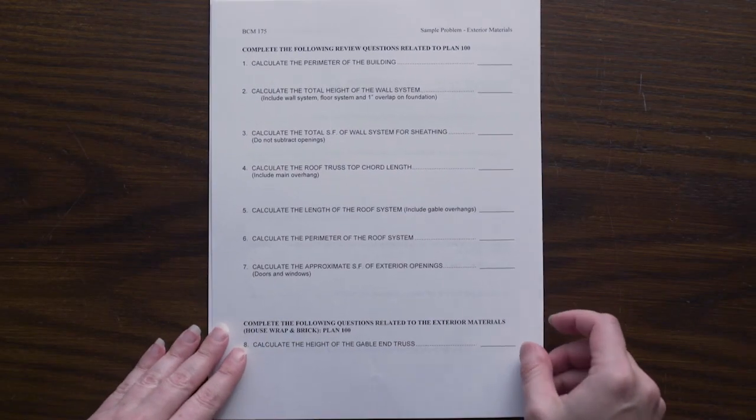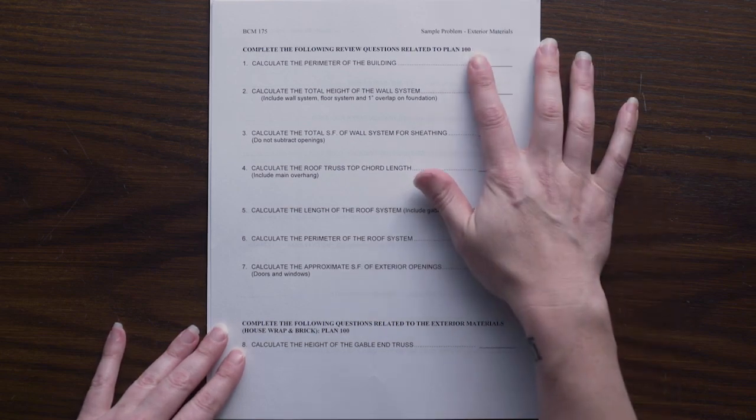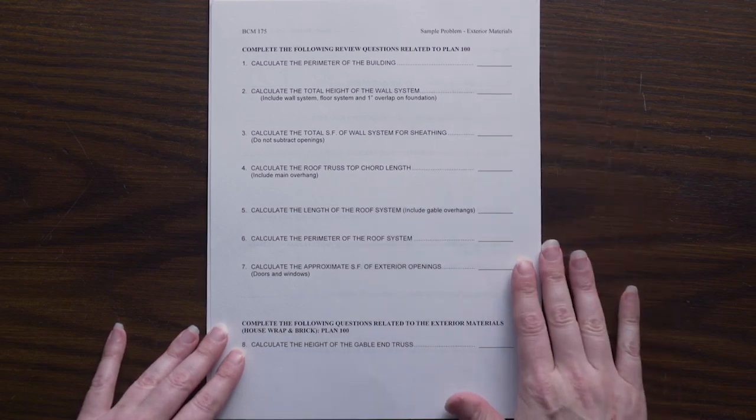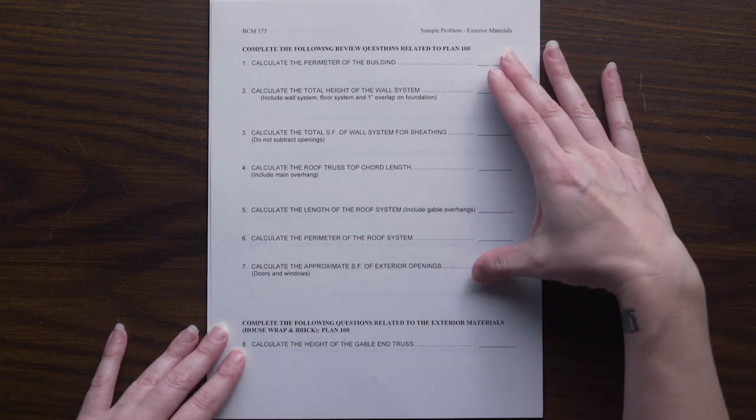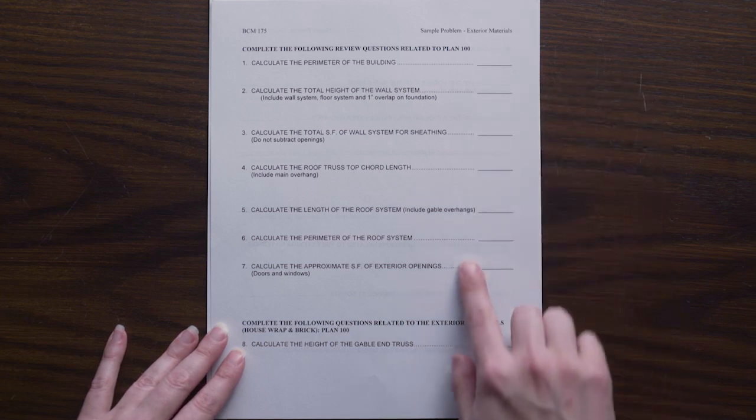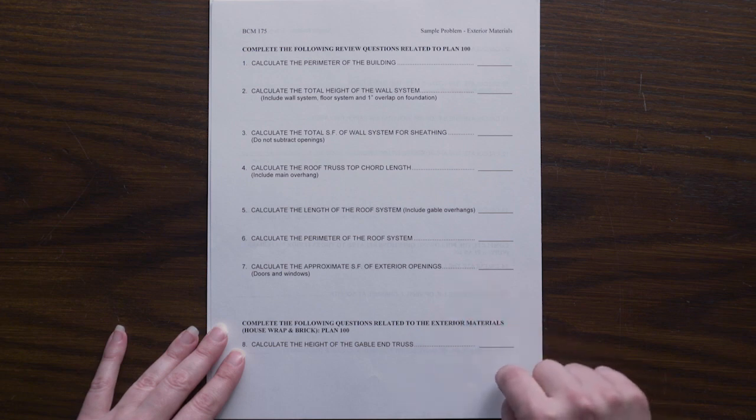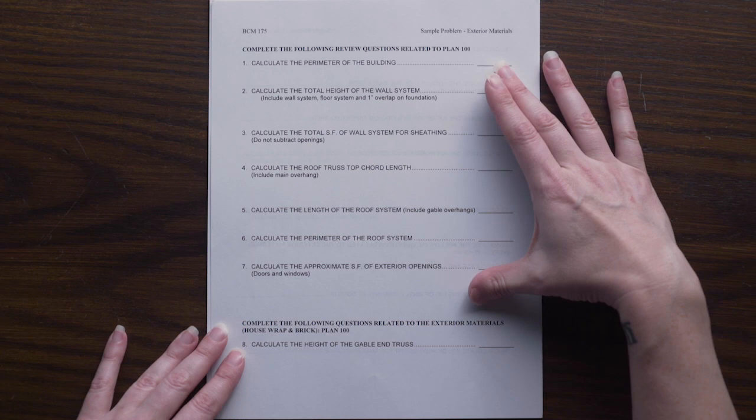For this sample problem we're going over exterior materials for plan 100. Refer to your plans and specs for some additional information. This will be broken into three separate problems. The first one, one through seven, will be a review of some of the other calculations we've already done for previous sample problems that we will need for the exterior materials.